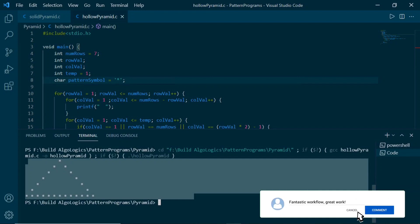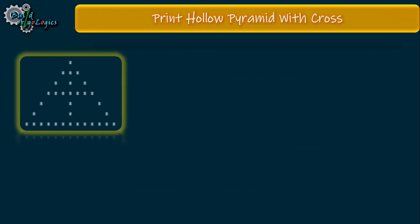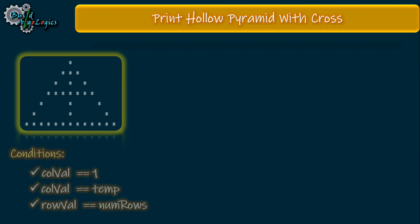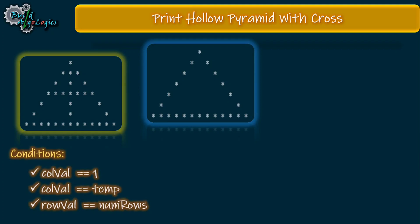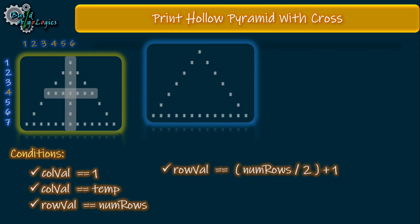Now let's see how to write our code for the next pattern — the hollow pyramid with cross. For printing this pattern we require those three conditions from the hollow pyramid, plus some more conditions to print the cross parts. For printing the first diagonal part, the row value is approximately half of the number of rows, so we can make our first extra condition based on that. This condition was also derived in many of our earlier problems.